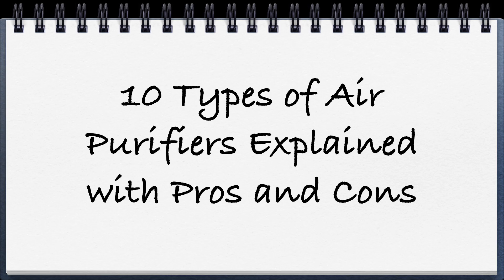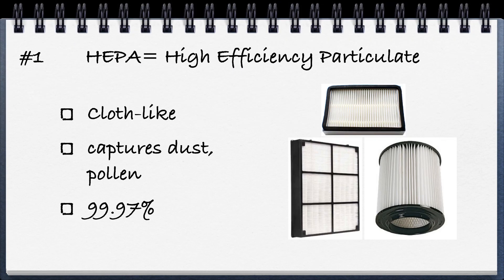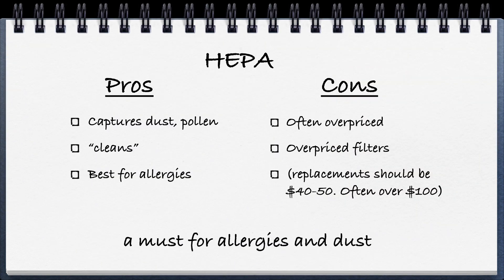Now let's go over the 10 types of air purifiers, along with the pros and cons of each. Number one is HEPA — High Efficiency Particulate Air. It's a cloth-like filter that must be replaced, but it's the best at capturing dust, pollen, hair, etc., and it's 99.97% effective. Pros: captures dust and pollen better than anything; best for allergy sufferers. Cons: often overpriced, with replacement filters sometimes over $100, when they should cost around $40–$50.